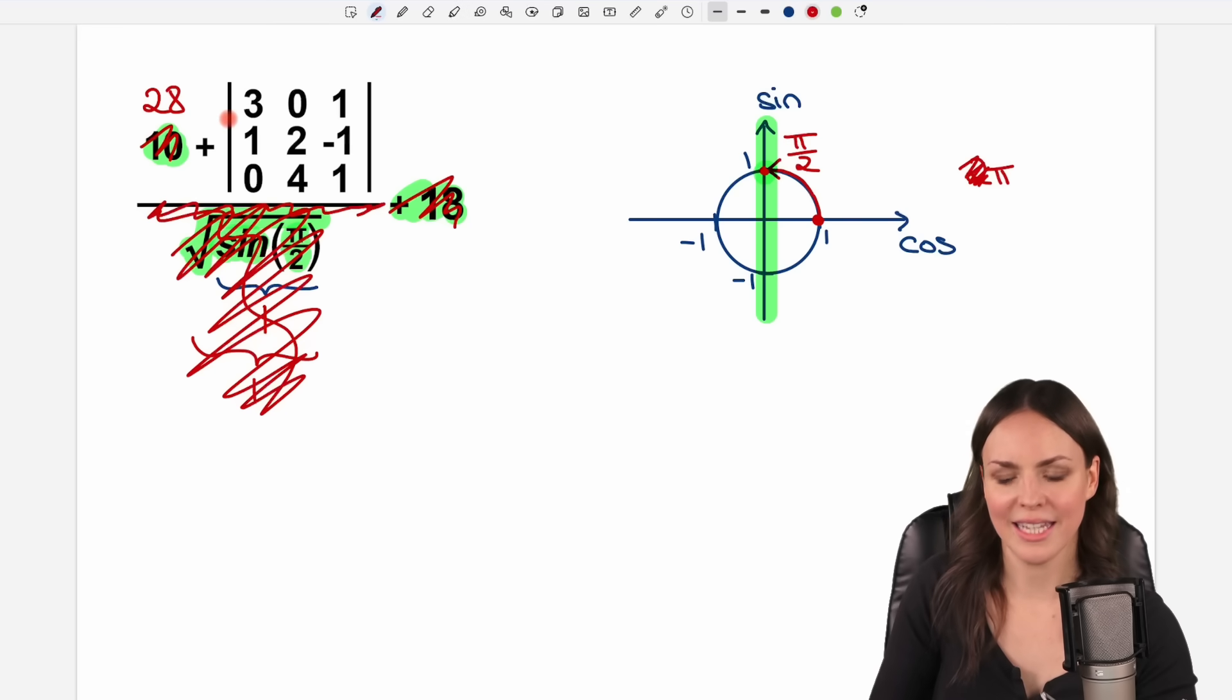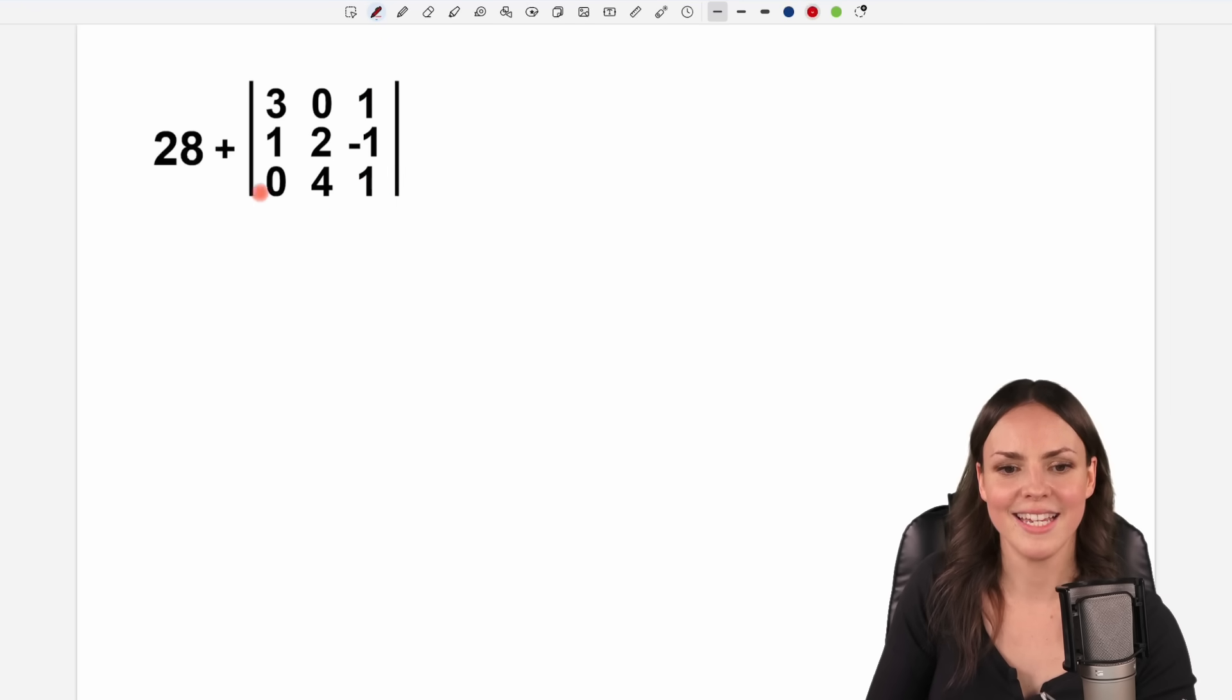So this is the only thing that is left. And what is this thing here? This is a matrix in here. We have three columns and three rows. So a 3 by 3 matrix. And these lines here tell us that we have to find the determinant of this matrix. How can we find the determinant of a 3 by 3 matrix? For example, with Sarrus's rule. Sarrus is the name of the French guy. So actually, the pronunciation would be Sarrus. But never mind, we call him Sarrus.